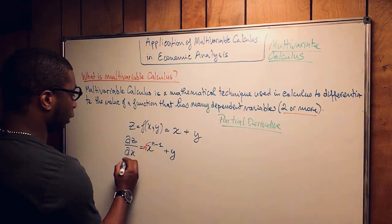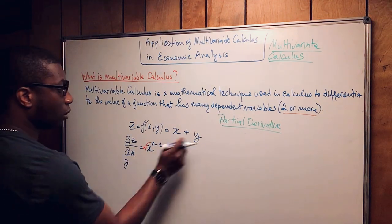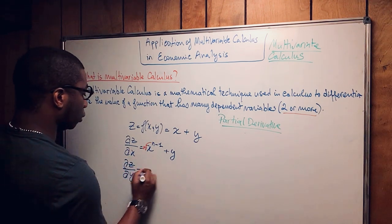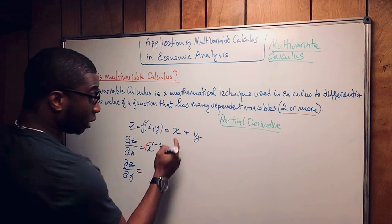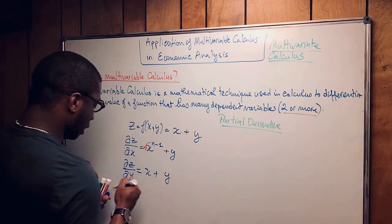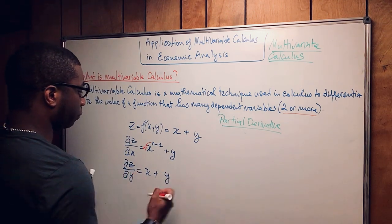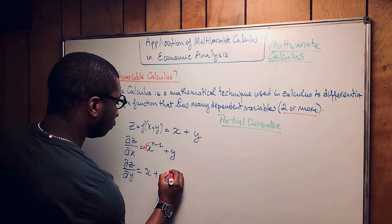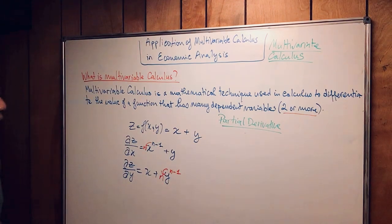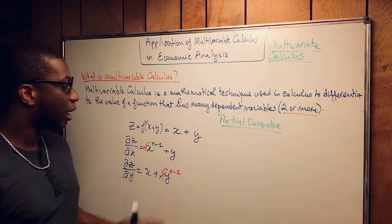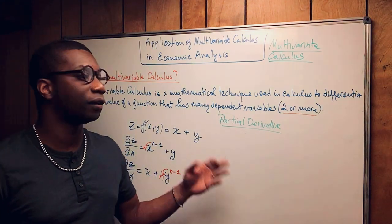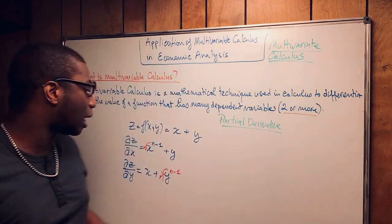If you're looking for the partial derivative of Y, you do the same. Partial derivative of Z over partial of Y: now you treat X as a constant, and for Y you apply the power rule — N minus 1, bring the N down. Very simple. What I'm showing you here is the very basic partial derivative technique that we use in multivariable calculus.